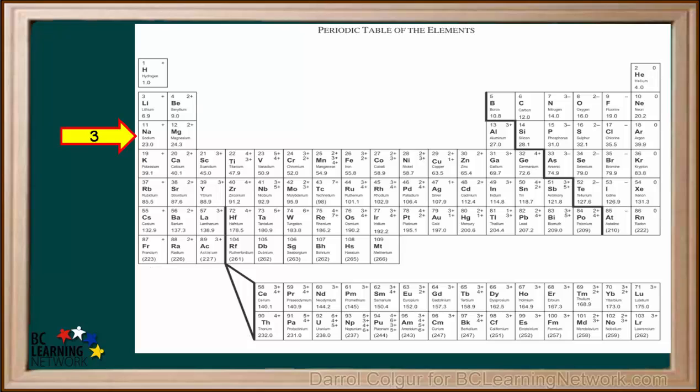The third period, called Period 3, contains elements 11 to 18, sodium to argon. If you count, you can see that Period 3 also contains 8 elements.